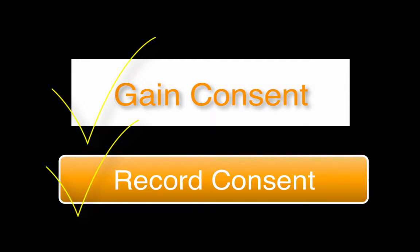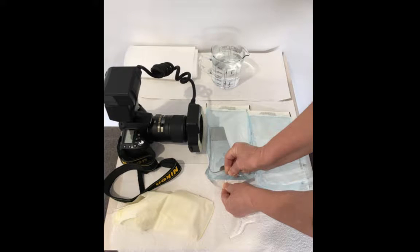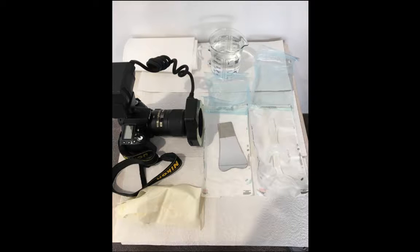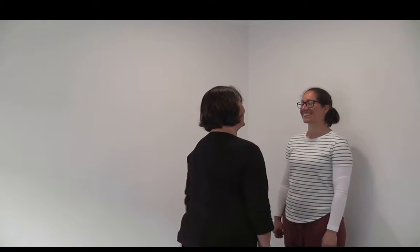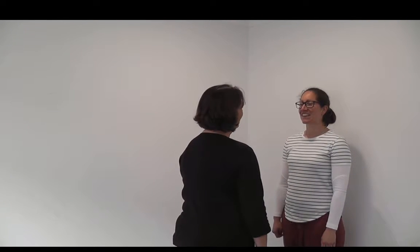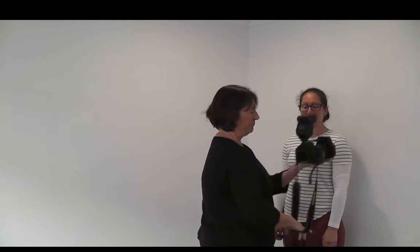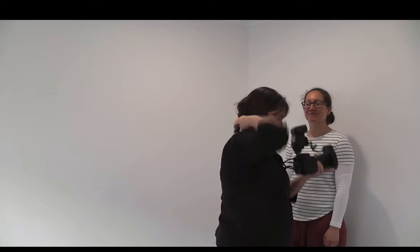Now you are ready to take these photographs, starting with the extraoral photos. Wash your hands and open the sterilised pouches. Leave the cheek and lip retractors and mirrors on these open pouches until you are ready to use them. Now get the camera — using the camera neck strap will prevent the camera from being accidentally dropped. Wash your hands again and put on disposable gloves.